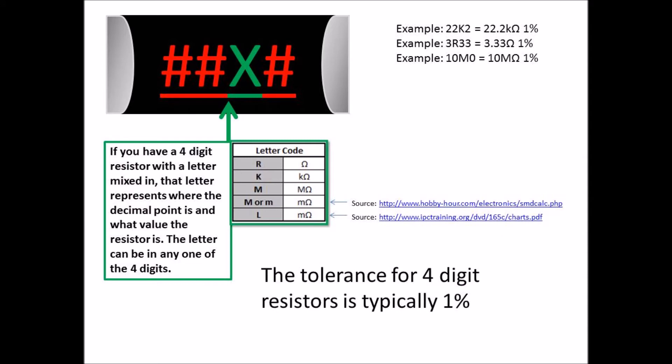Now here's another example with the letter. It's the same as the three-digit, where the letter equals the decimal point. The letter also equals the value. So R is just wherever the decimal point is, the K would be kilohm, M would be megaohm.